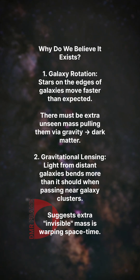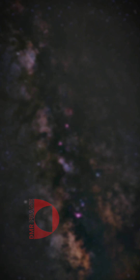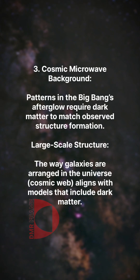Second, gravitational lensing: light from distant galaxies bends more than it should when passing near galaxy clusters, suggesting extra invisible mass is warping space-time. Third, the cosmic microwave background: patterns in the Big Bang's afterglow require dark matter to match observed structure formation.